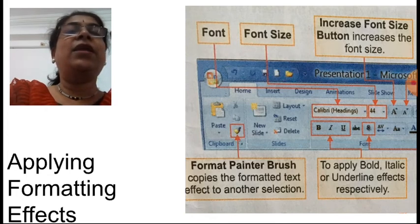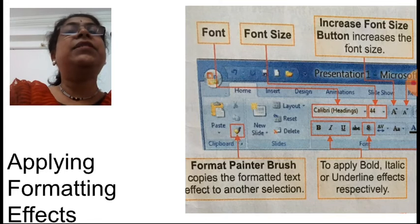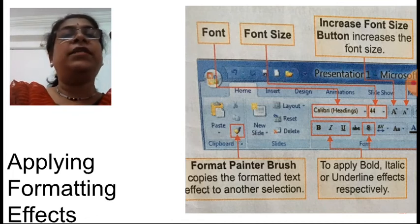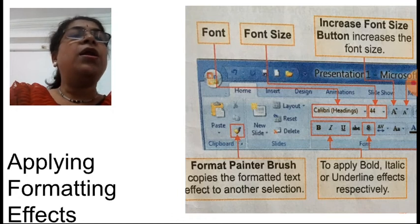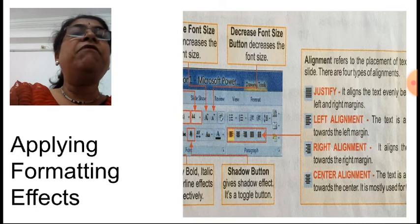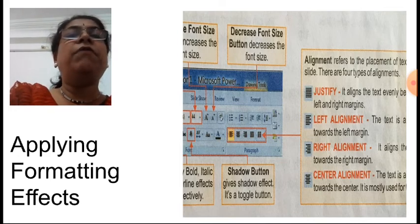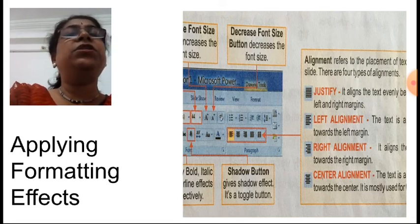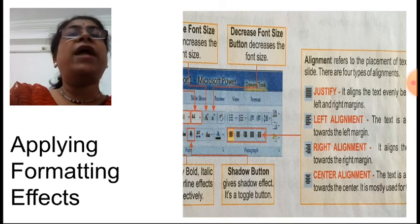There are bold, italic, and underline options. Bold makes the text dark, italic makes it slightly slanting, and underline places a line below the text. There are also buttons to increase and decrease font size, shown with the alphabet A. For the text, if you want a shadow effect, that is also possible using the shadow button.